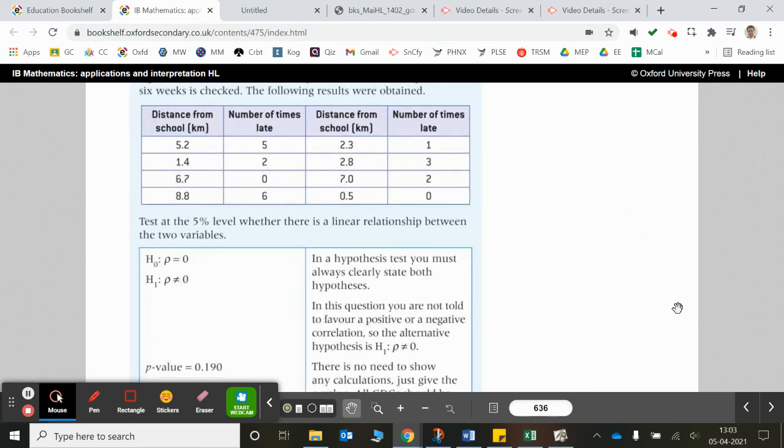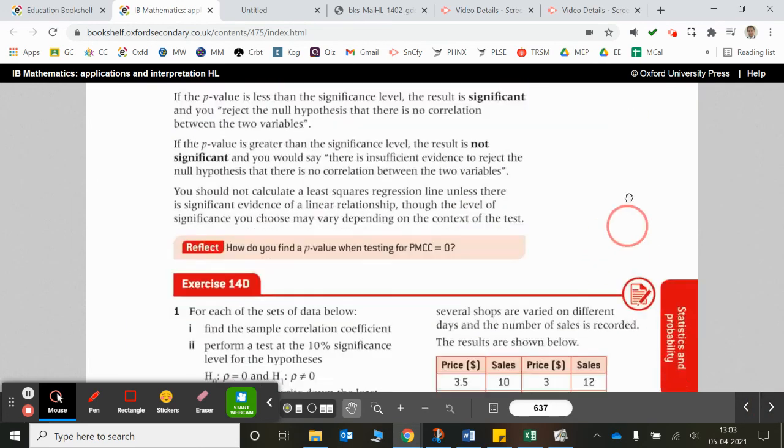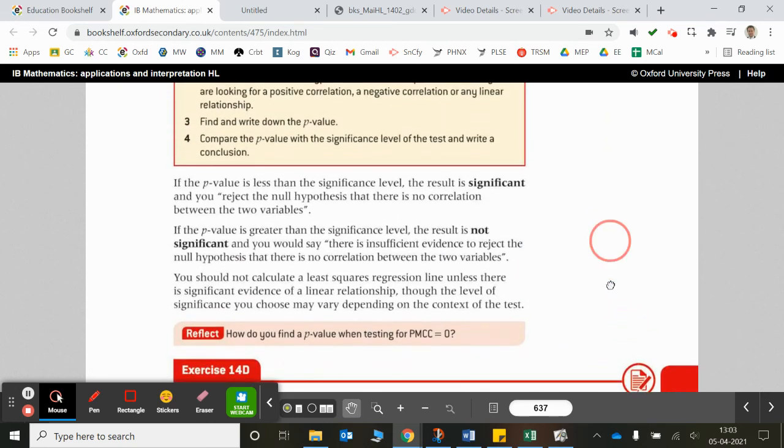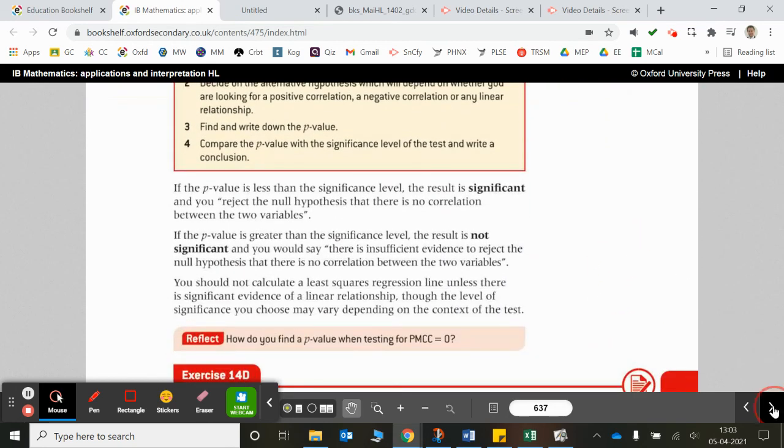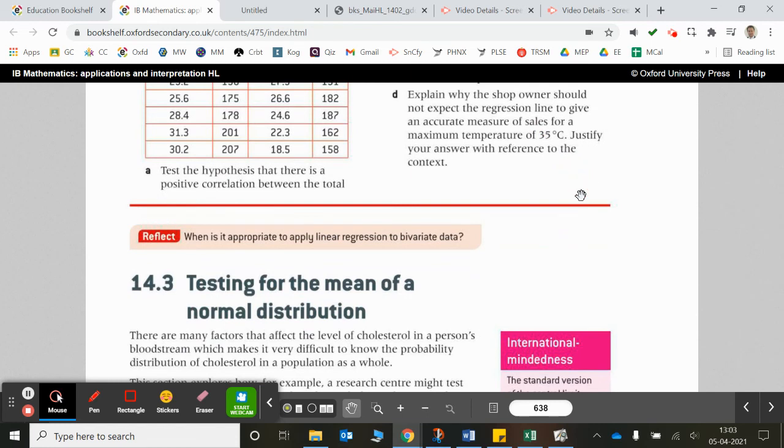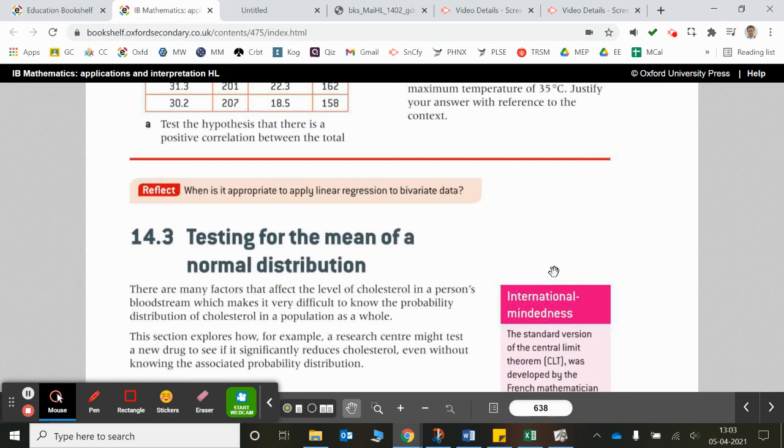So have a go at a couple of these questions. The next section is going to be a fair bit harder. So the next section is on testing for the mean of a normal distribution. So we're going to be testing the parameter of a normal distribution, which is similar to 14B and 14C, but we're also going to involve here two-tailed tests.